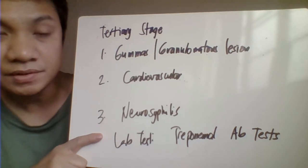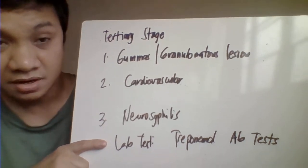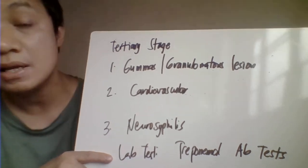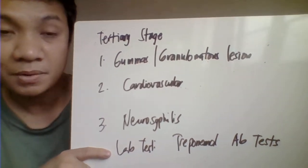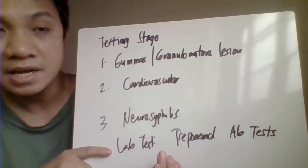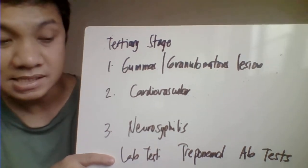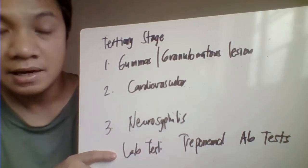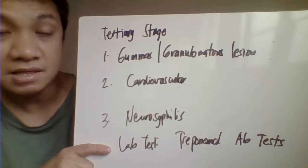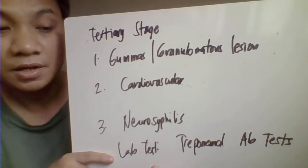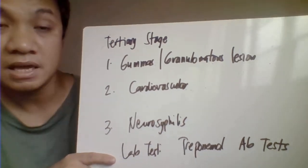The third manifestation is neurosyphilis, which is the late stage. CNS involvement can occur even after the primary stage, but neurosyphilis is always an indication of the late or final stage. Manifestations include tabes dorsalis (degeneration of the spinal cord), general paresis, and chronic progressive dementia. Laboratory tests for the tertiary stage include only treponemal antibody testing; dark field microscopy and non-treponemal tests such as VDRL and RPR give negative results.